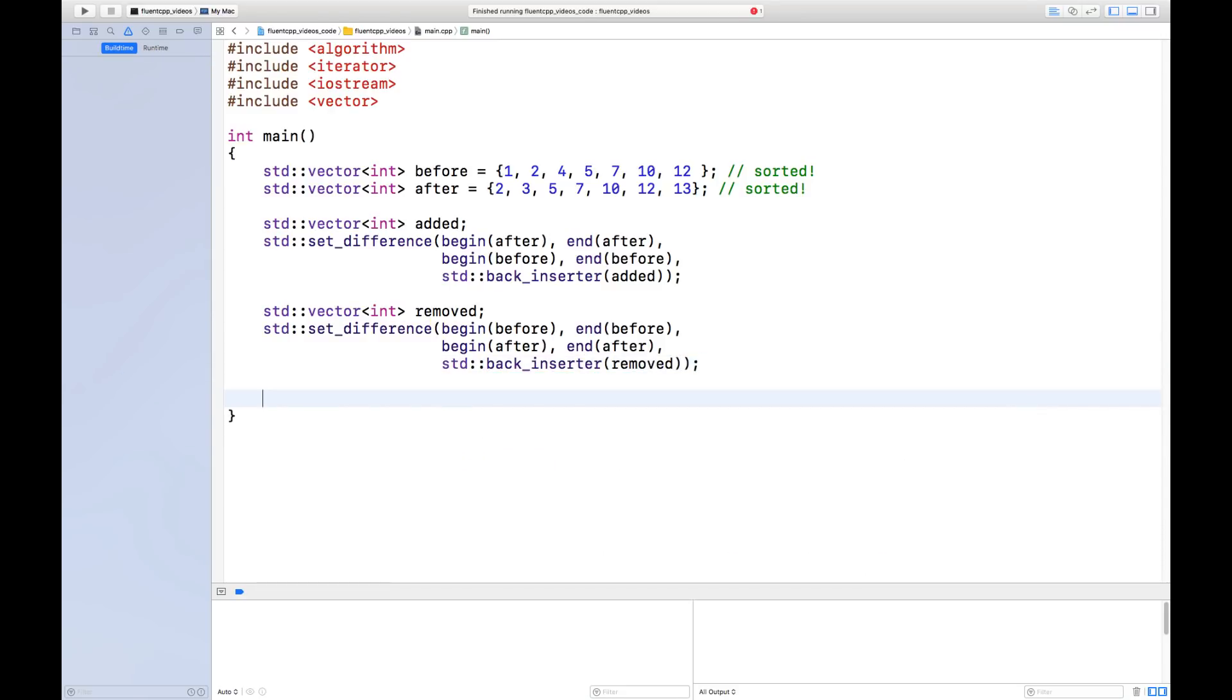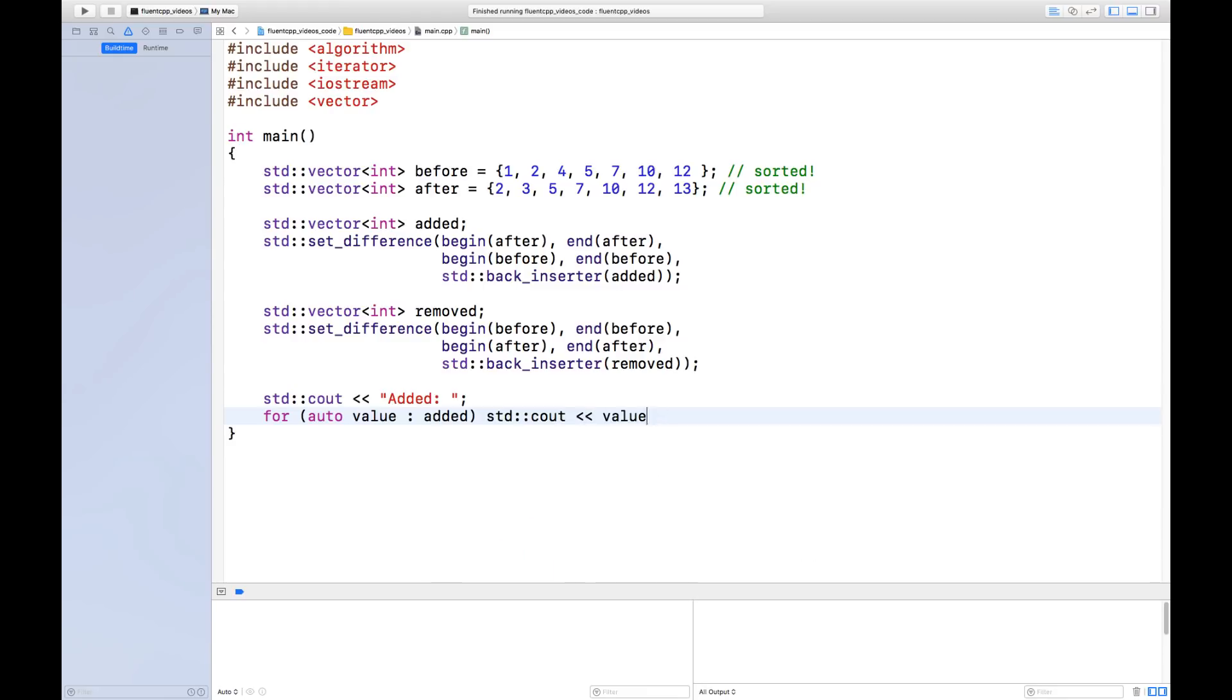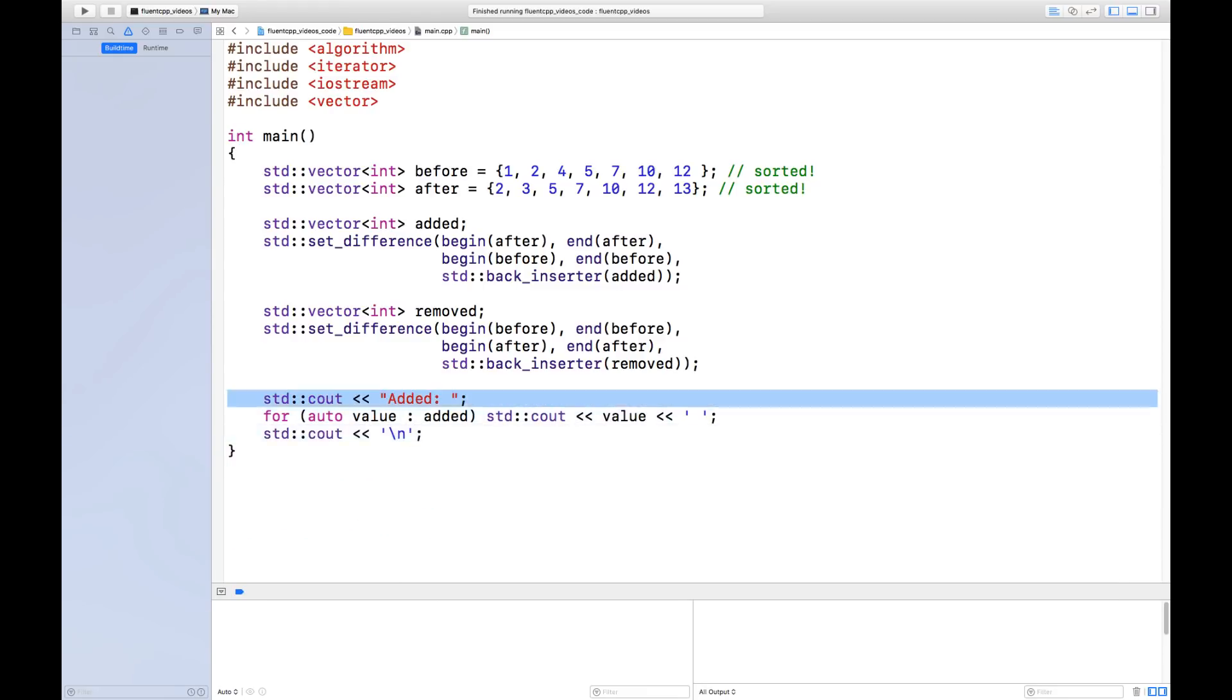All right, so let's try out that code to see what it outputs. There we are. Let's run that program and the elements that were added are 3 and 13, here and there, and the elements that were removed are 1 and 4, which are before and not after. So using set_difference allows to see what's the difference between two sets very easily.